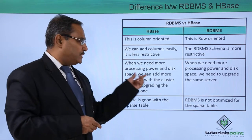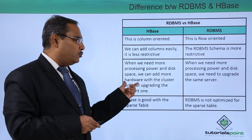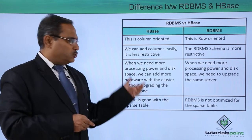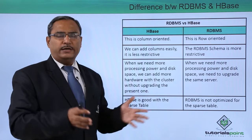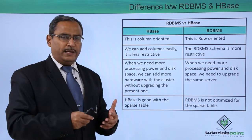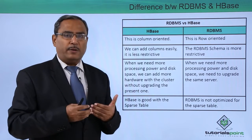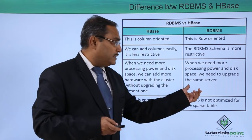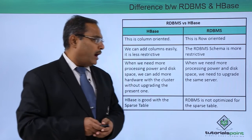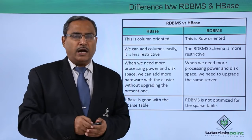When we need more processing power and disk space in HBase, we can add more hardware to the cluster without upgrading the present one. We can add more commodity hardware, so the storing cost and hardware cost will be lesser, and in this way we can have more processing power. But in case of RDBMS, when we need more processing power and disk space, we need to upgrade the same server, not add other commodity hardware.